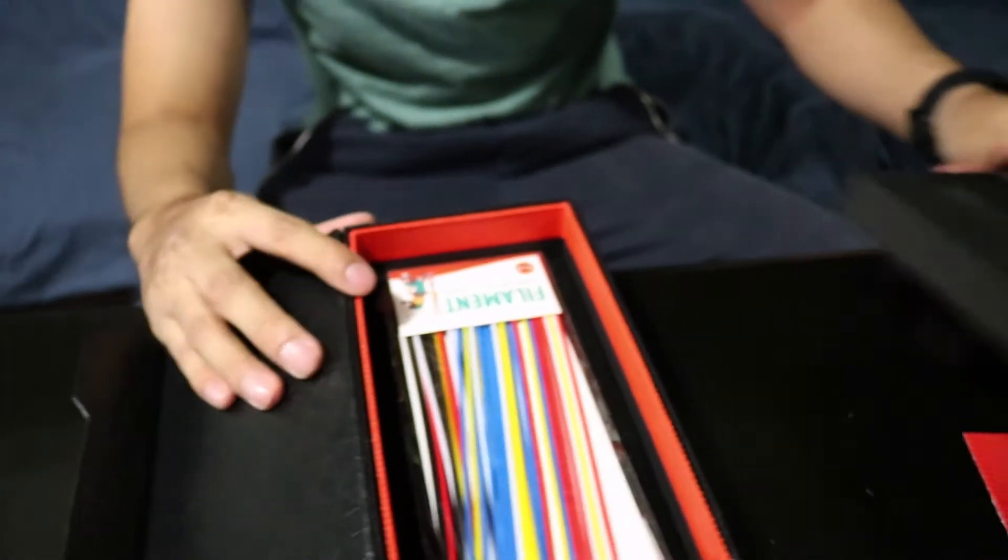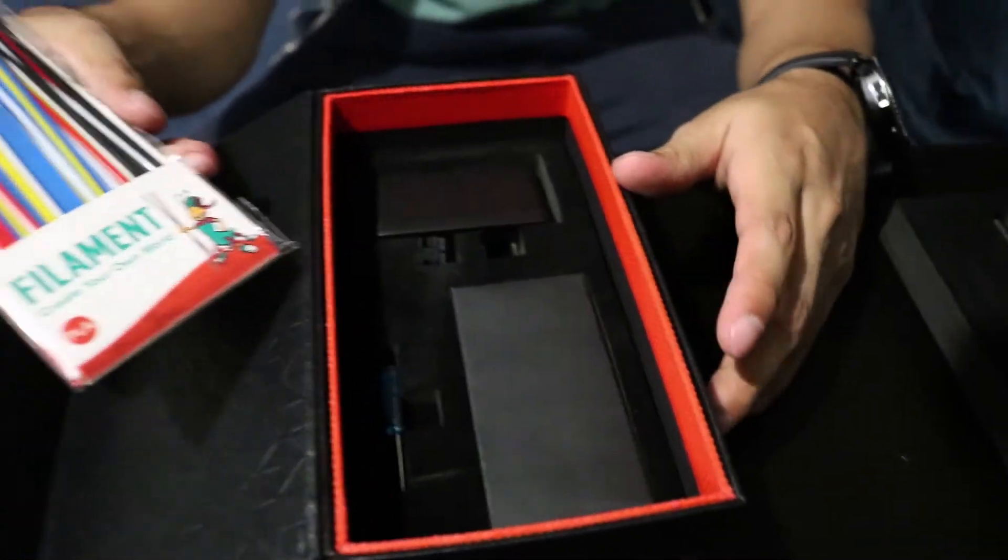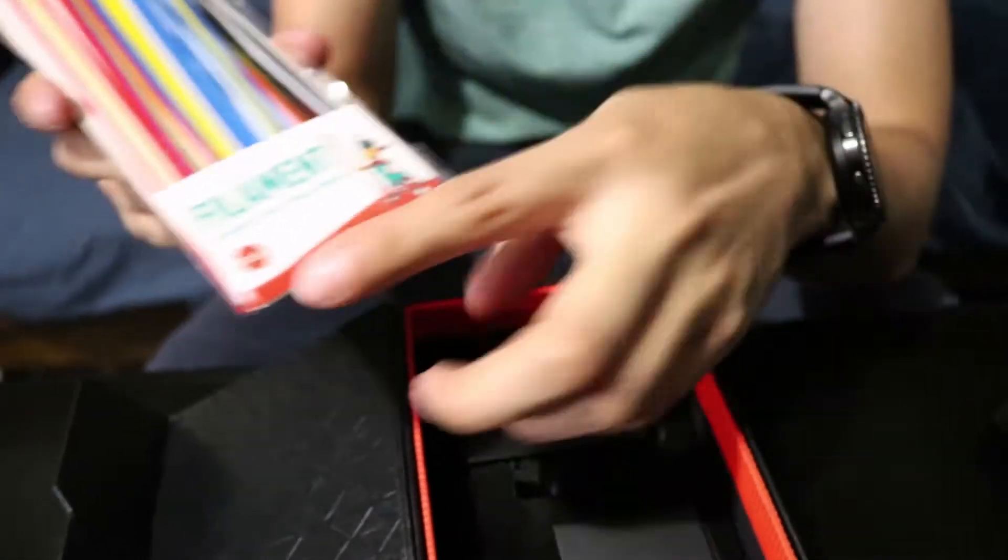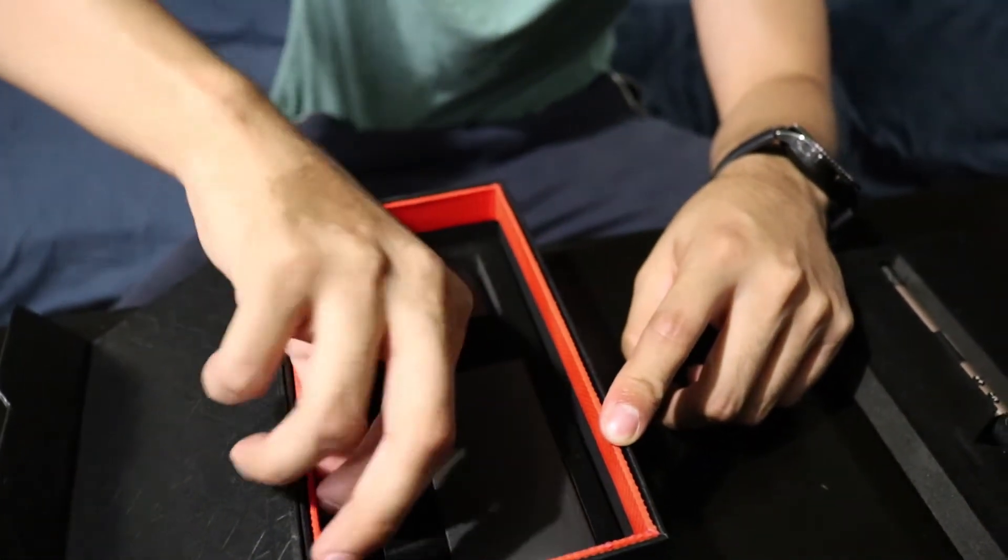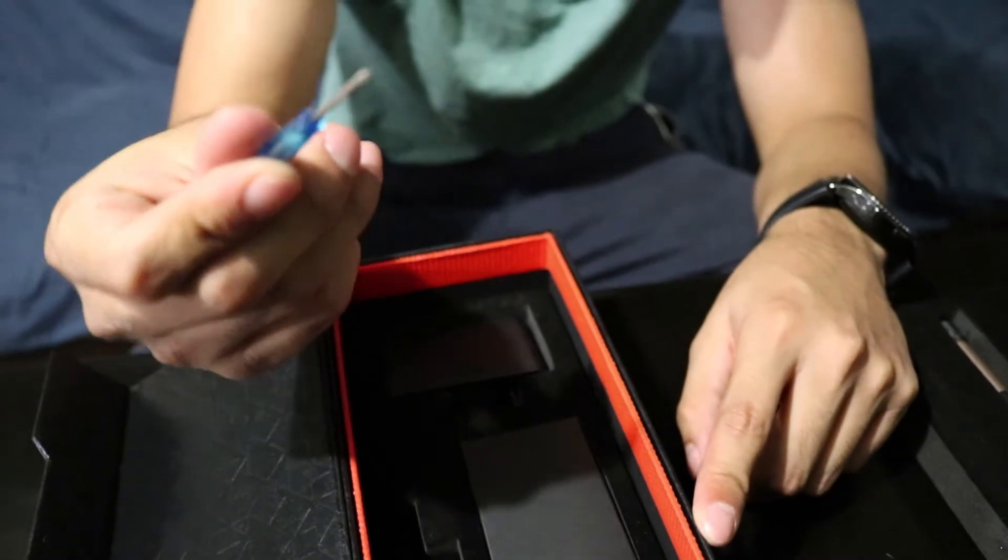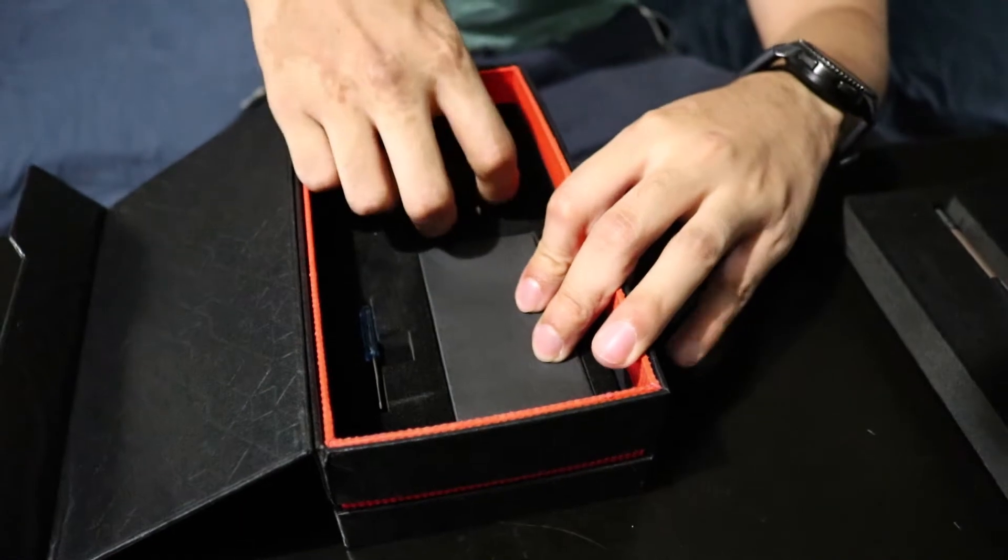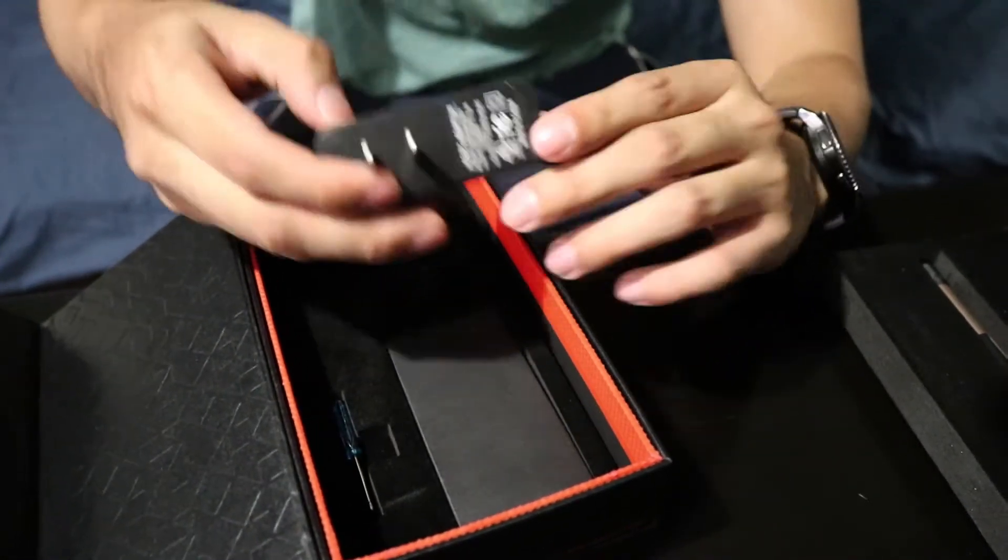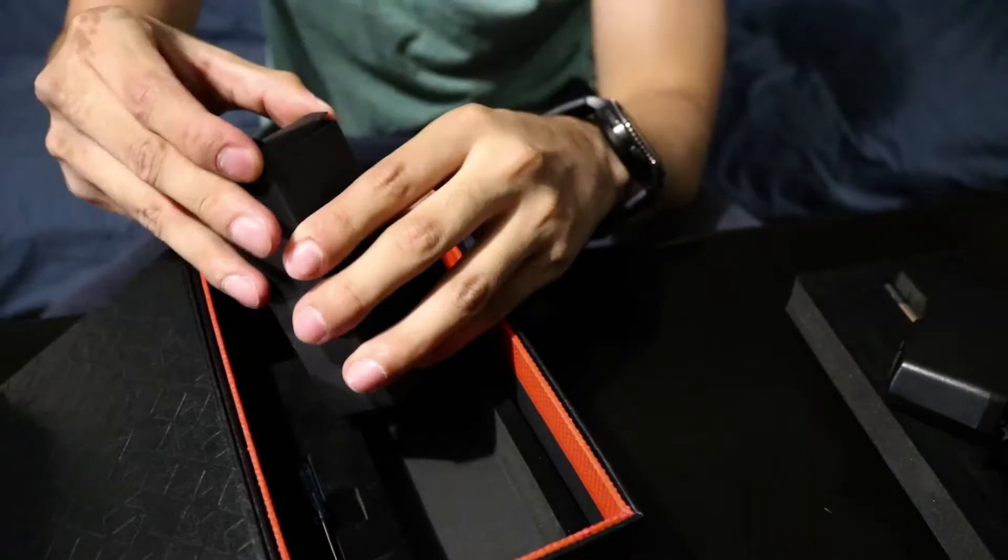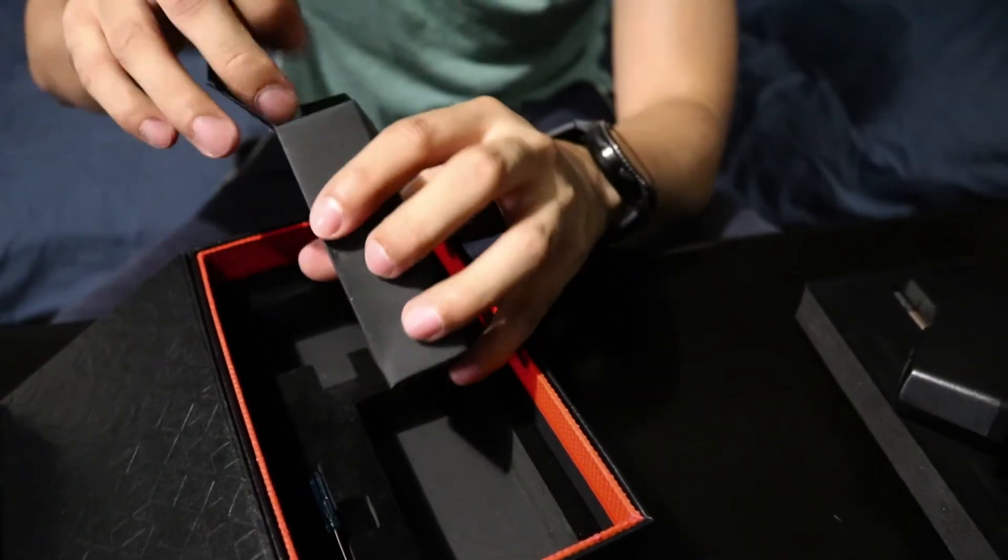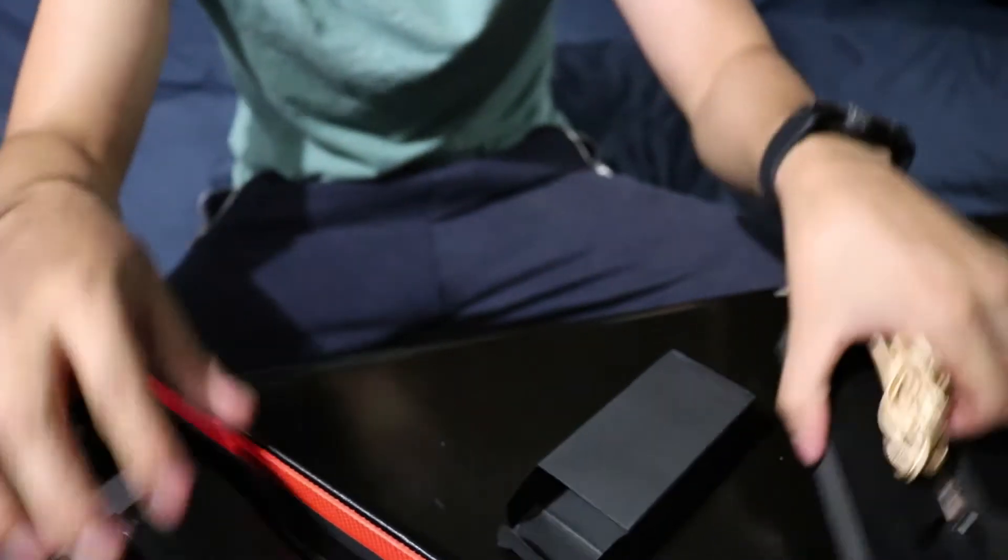Look at that later. It comes with the filaments, multiple colors, and it's PLA. Then we got a small little screwdriver, put it back in there. I guess the power brick, and then in this box we have, oh that's very nice, looks to be a corded mat.